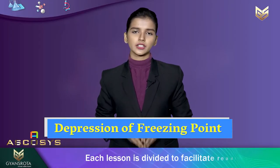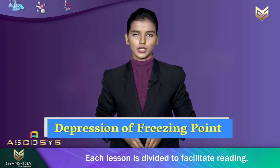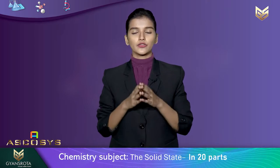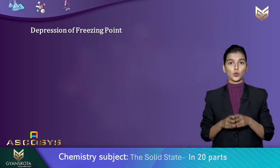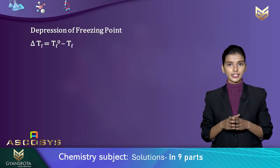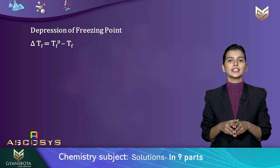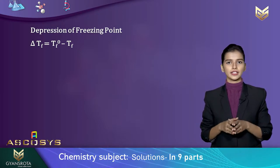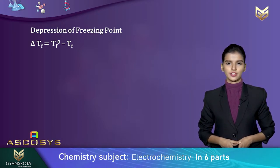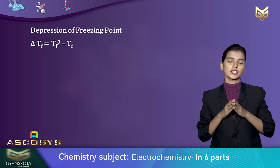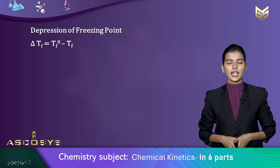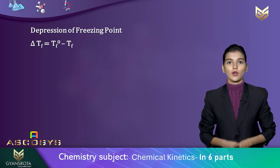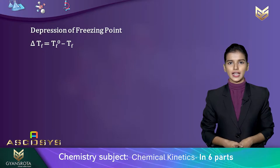The third property is depression in freezing point. Contrary to the boiling point, the freezing point decreases when a solute is added. We can write delta Tf equals Tf0 minus Tf, where Tf0 is the freezing point of pure solvent and Tf is the freezing point when solute is added.